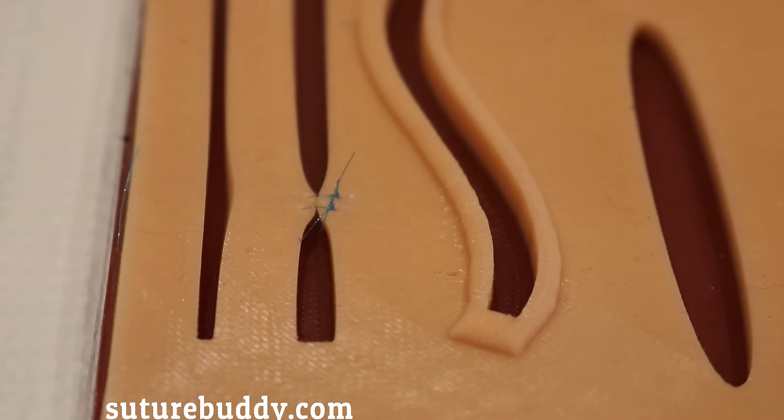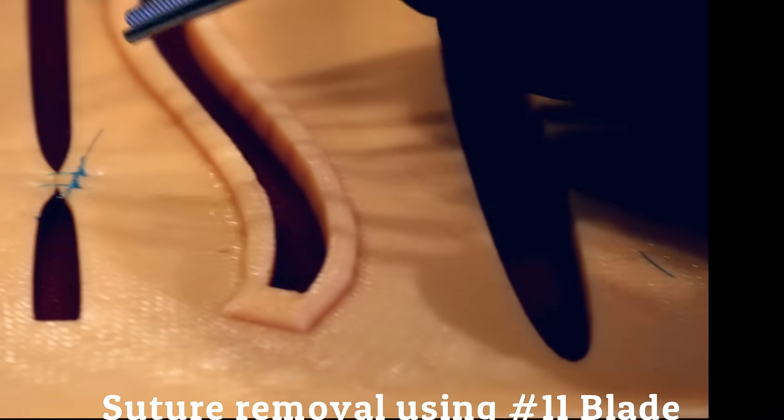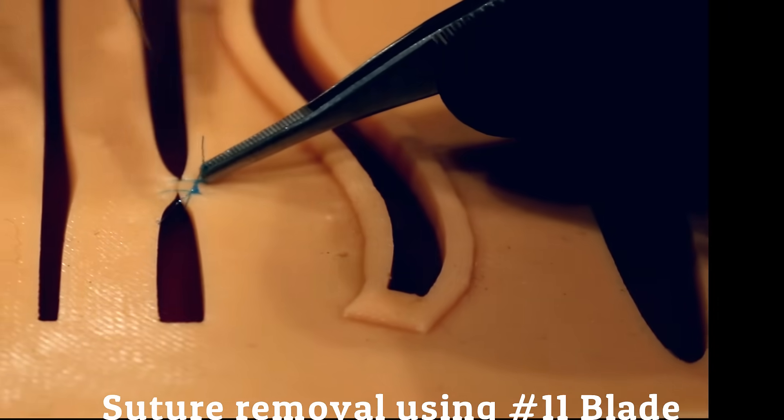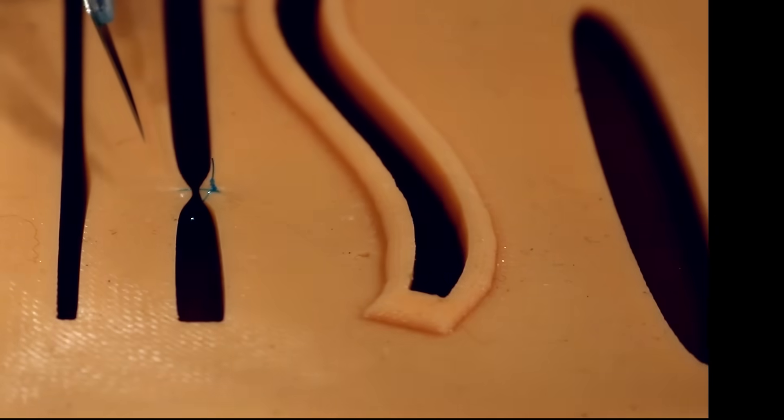Here we go, this is a close-up zoom of two simple interrupted sutures. So grab the tail, you see that, lift up and the sharp end, nick, real easy. They come right out. I'm going to do that again.